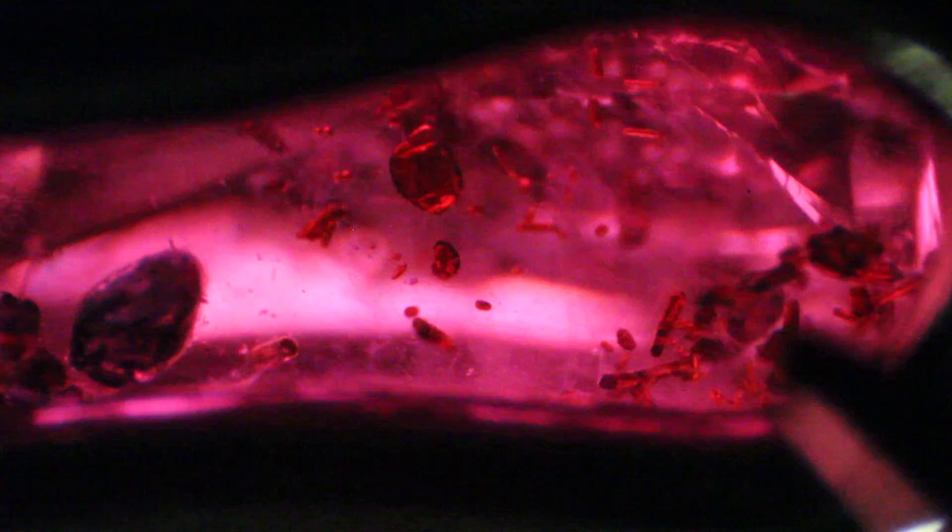So these brownish red ones here are actually well-formed rutile crystals, or rutile, depending on how you say it. And typically in corundum, what we'll find is appetite crystals and silk.